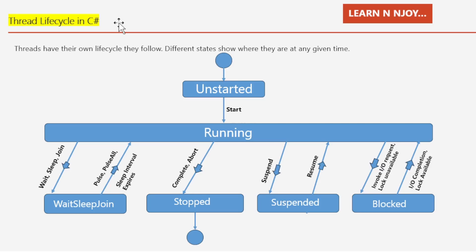Threads have their own life cycle — they follow different states showing where they are at any given time. When a thread is first created, it's in the unstarted state, like a newborn waiting to begin its journey. When we use the start method, it becomes runnable — ready to go but not yet running, like a runner waiting for the starting gun. Once the CPU gives it time, the thread starts actively executing and its status changes to running.